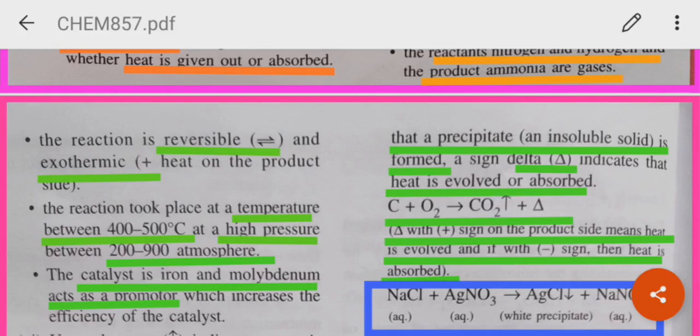If there is a plus sign along with delta sign, that means heat is evolved, and if there is minus sign along with delta sign, it means that heat is absorbed or it is an endothermic reaction. Now, what do you see here? Carbon reacts with oxygen to give carbon dioxide, and what do you see here? Upward arrow. So, what does that mean? It means that carbon dioxide evolved out here is a gas.